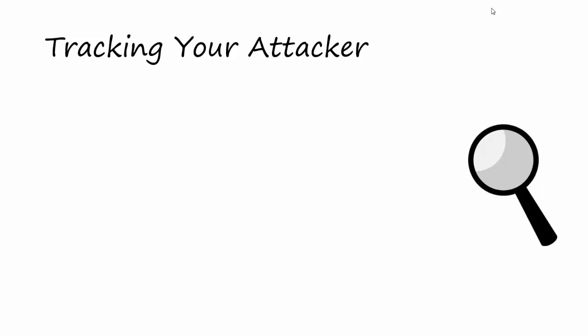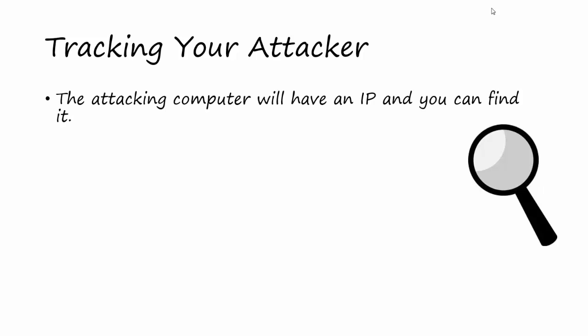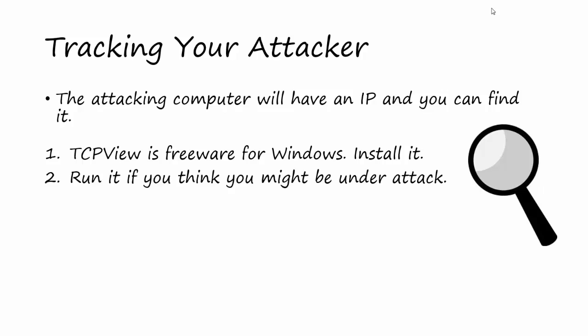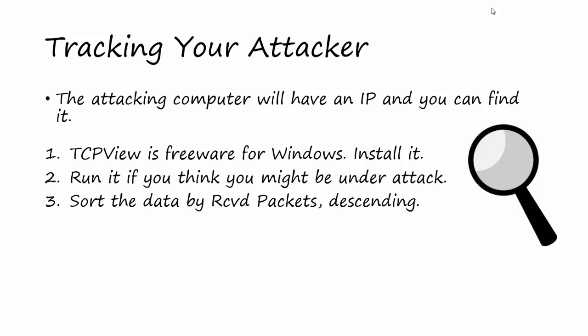Let's talk about what to do if you think you're under attack. The attacking computer will have an IP address and you can definitely find it. I use a software called TCPView — it's freeware, absolutely free for Windows. Just look up TCPView, download it. It's actually just an executable, tcpview.exe, that you can run with no formal install process. Run it if you think you might be under attack, and then sort the data you're receiving by received packets, descending.